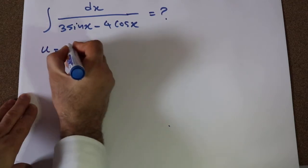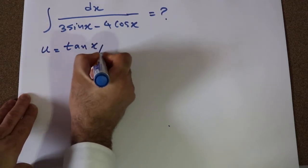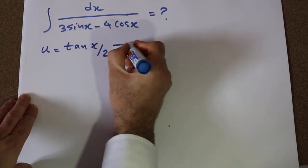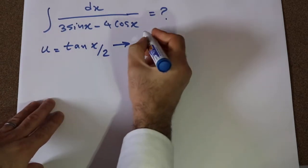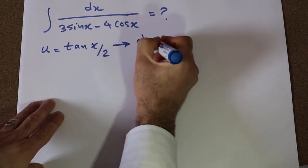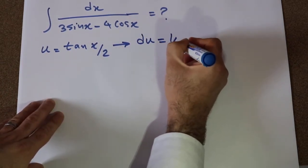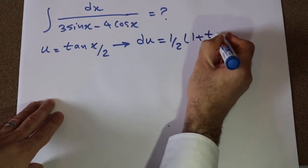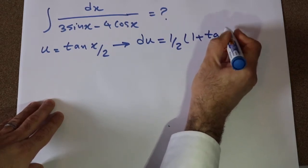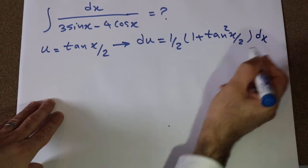If you define u as tangent x divided by 2, and take the derivative from each side of this equation, you have du equal to 1 divided by 2 times 1 plus tangent squared x divided by 2, times dx.